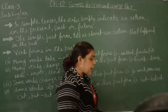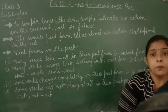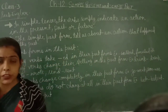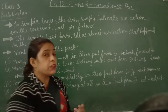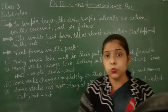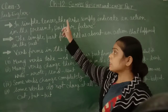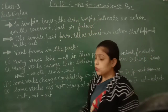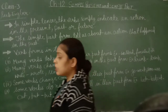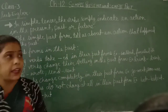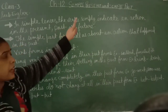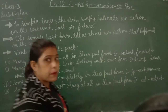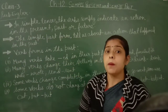There are three types of tenses: present tense, past tense, and future tense. But we have to read only two types of tenses — present tense and past tense. So now we are reading simple present and simple past.